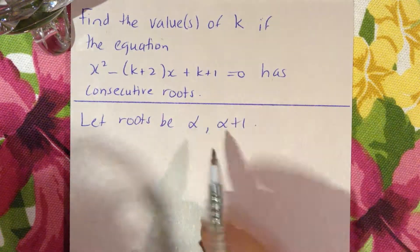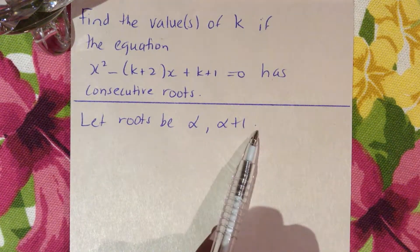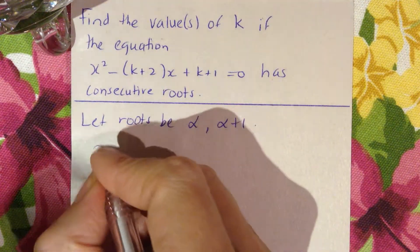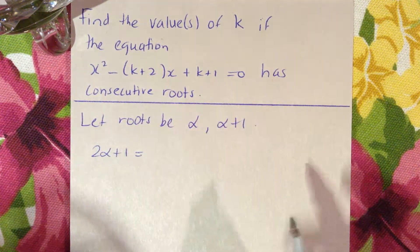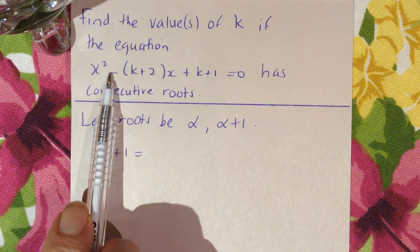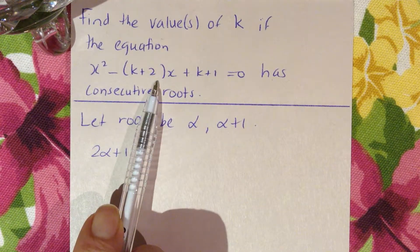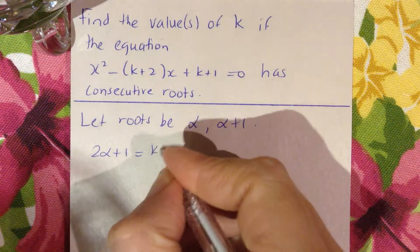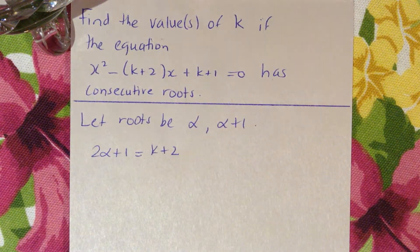Let's find the sum of the roots. That will be α + α+1, which is 2α+1 equals -b/a. Now b is -(k+2), so minus that will just be k+2 over 1.